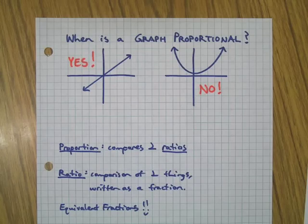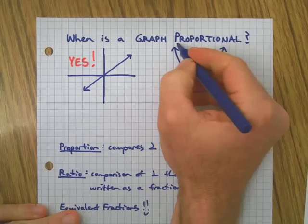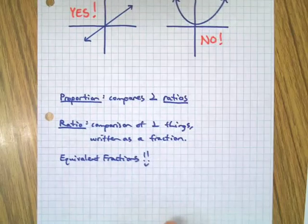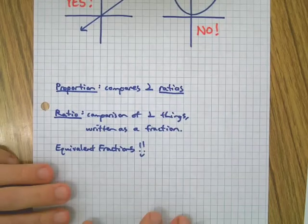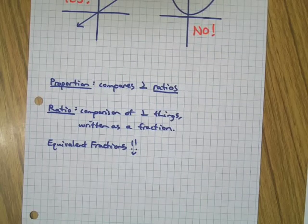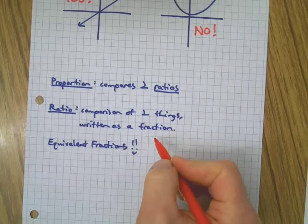I'm gonna go ahead and roll with that, even with the announcement in the background, because I'm not on site council. Here we go. So here's the long way to get there. First of all, to tell if something's proportional, we need to know what that means. So let's do a little vocab review here. A proportion compares two ratios. Well, that's great. What's a ratio? Well, comparison of two things written as a fraction.